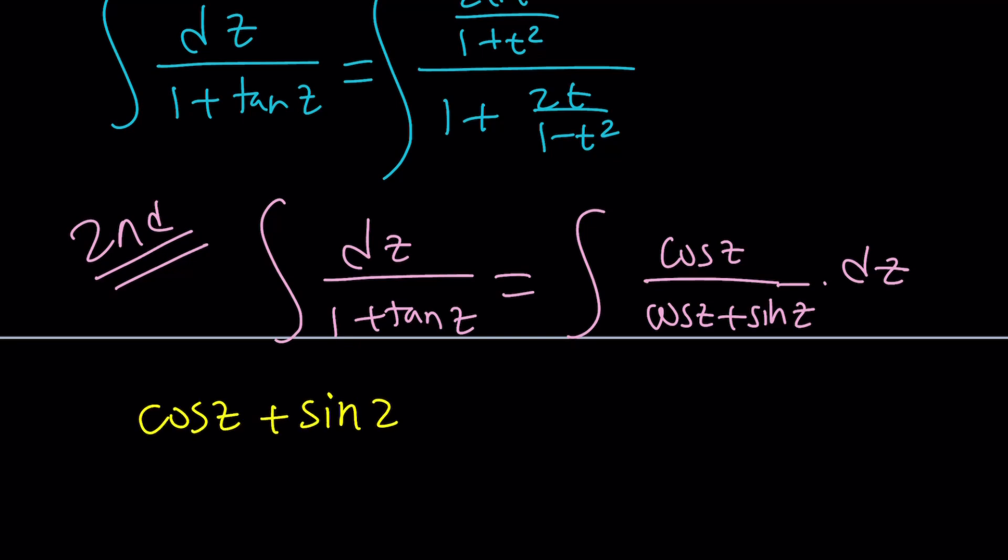Now, notice that this is the same thing as the denominator. And then think about the derivative of the denominator. The derivative of cosine is negative sine. The derivative of sine is cosine. So the derivative of this expression is, if I call this f, f prime is just going to be negative sine z plus cosine z or cosine z minus sine z. So that's what I'm going to add to this expression.